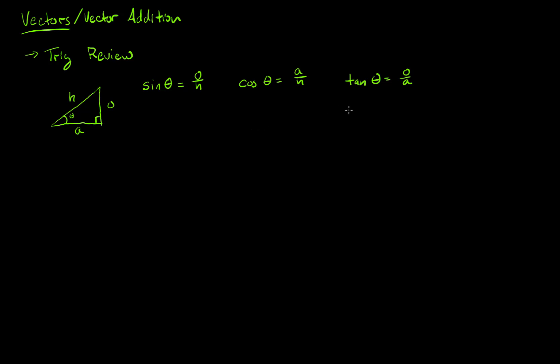The other thing we'll be using is the Pythagorean theorem, which says h squared equals the adjacent squared plus the opposite squared. We'll be using this, but I want to put it into Cartesian coordinates so we can start analyzing it and pull out some basic definitions.